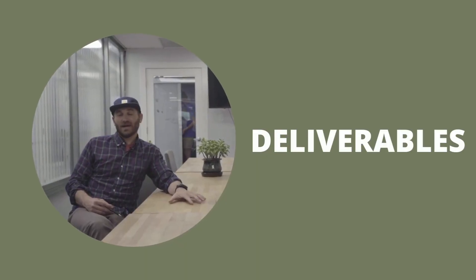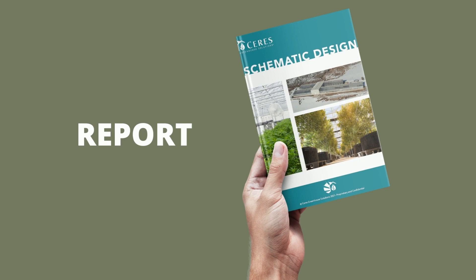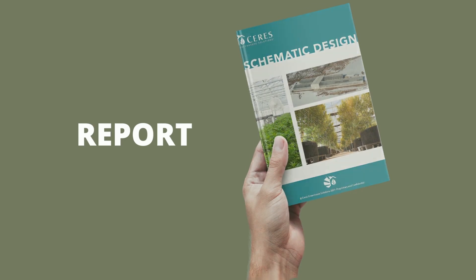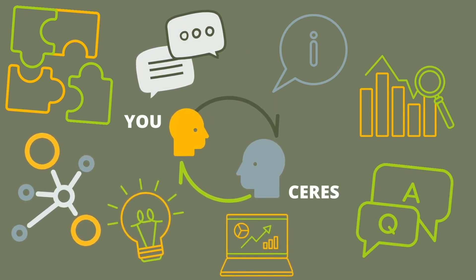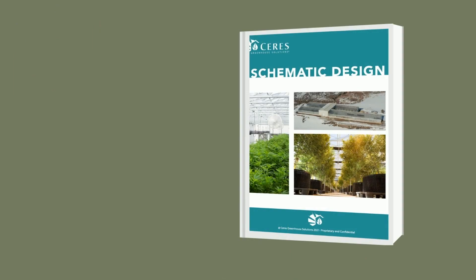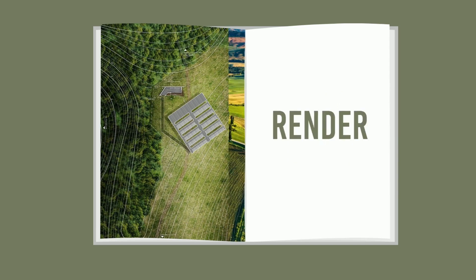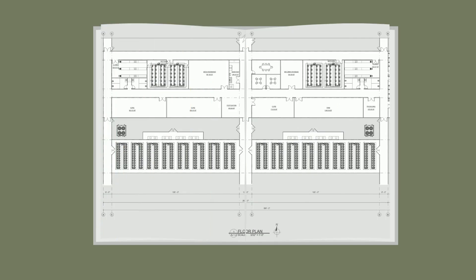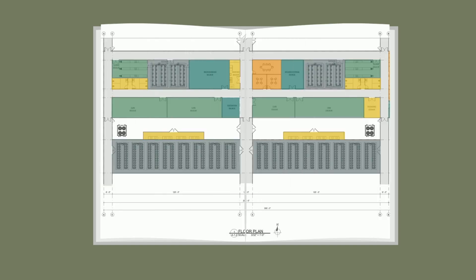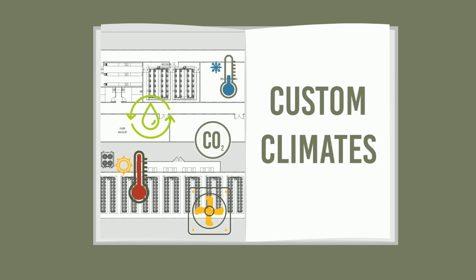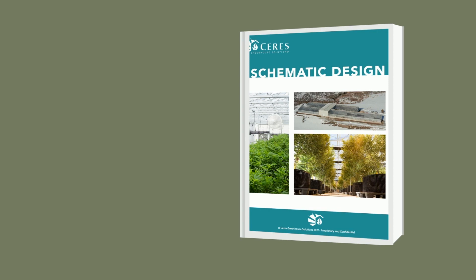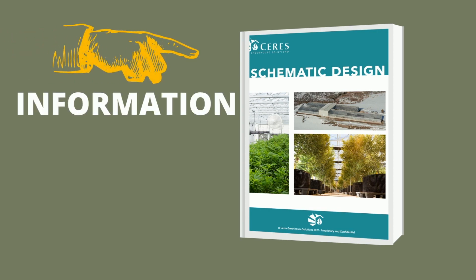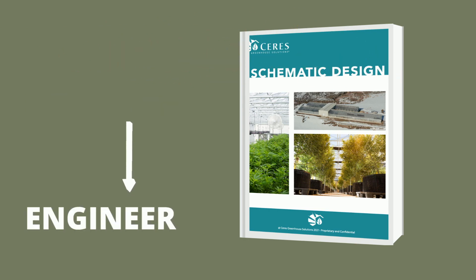What do you get out of the schematic design process? When we're done, we're going to have built a very robust schematic design report. That report is a grouping of all the information that you've brought to us and that we've also created in-house, which includes a site plan, initial renders, architectural floor plans, the conditions needed in every room, and environmental bands — where we'll define the climate range in the greenhouses that you're comfortable with and you approve. The goal is that this packet has all the information needed to move us into design development and MEP engineering.